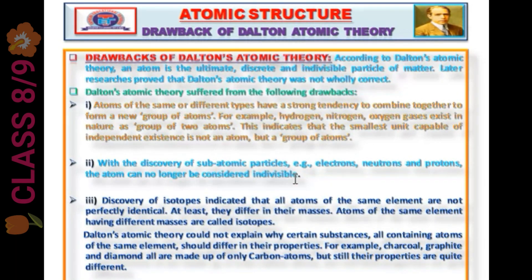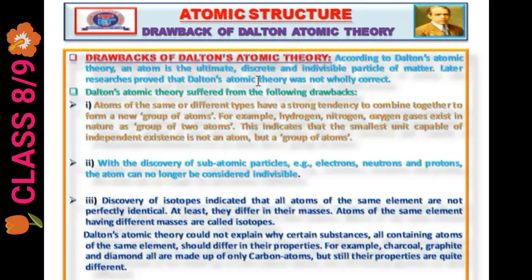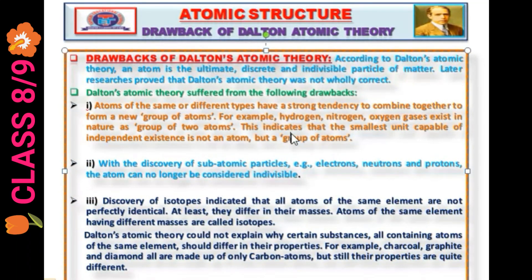What was the limitation of Dalton atomic theory? This theory was able to explain the law of chemical combination, but could not explain the points raised with the advancement and development in the field of structural chemistry, particularly the development of atomic structure. According to Dalton atomic theory, an atom is the ultimate indivisible particle of matter. Later researches proved that Dalton atomic theory was not wholly correct.